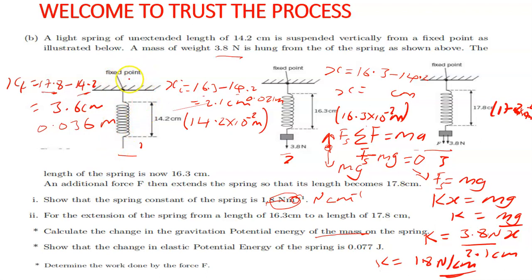Why are we considering diagram 1 and these other diagrams? Initially, diagram 1 doesn't have anything on it. The spring is in its natural length. Diagram 2 has a mass hanging onto the spring, so the length changed from 14.2 to 16.3—this is the initial extension. The second extension happened when we have an additional force at 17.8.